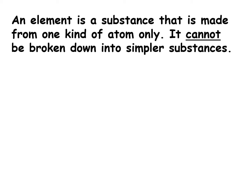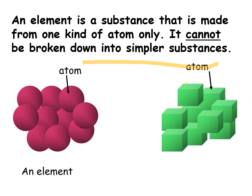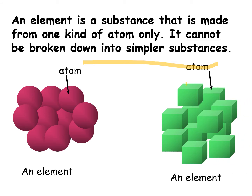An element is a substance that is made from one kind of an atom. It cannot be broken down into a simpler substance. Here are examples of an element. When you say element, it is composed of a single substance.